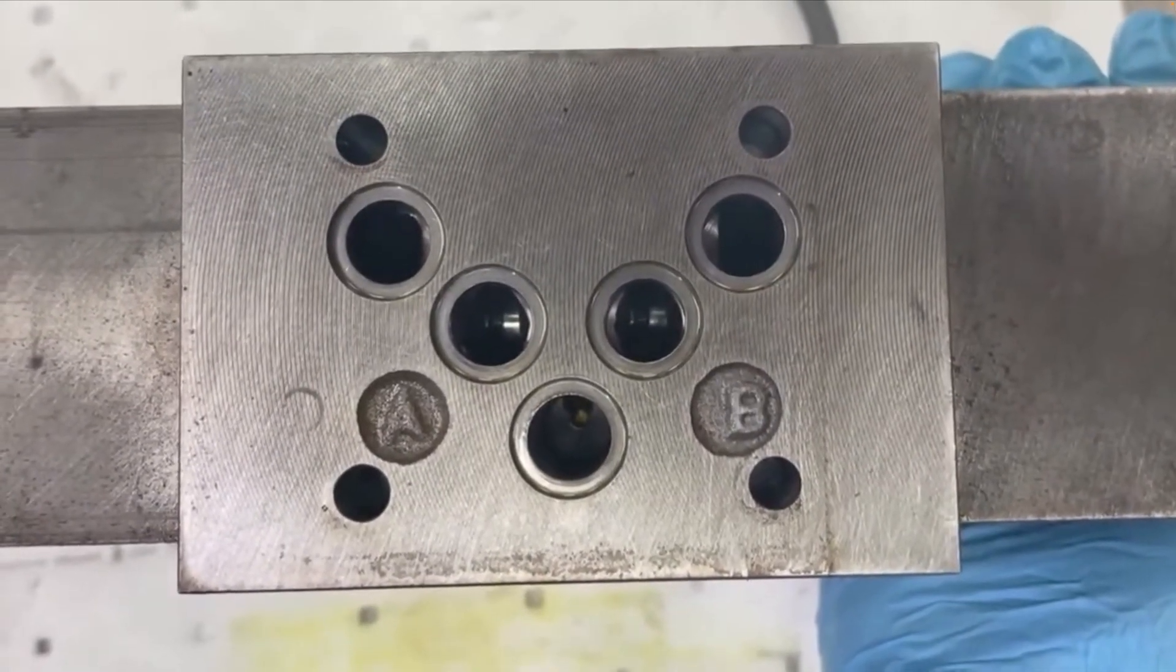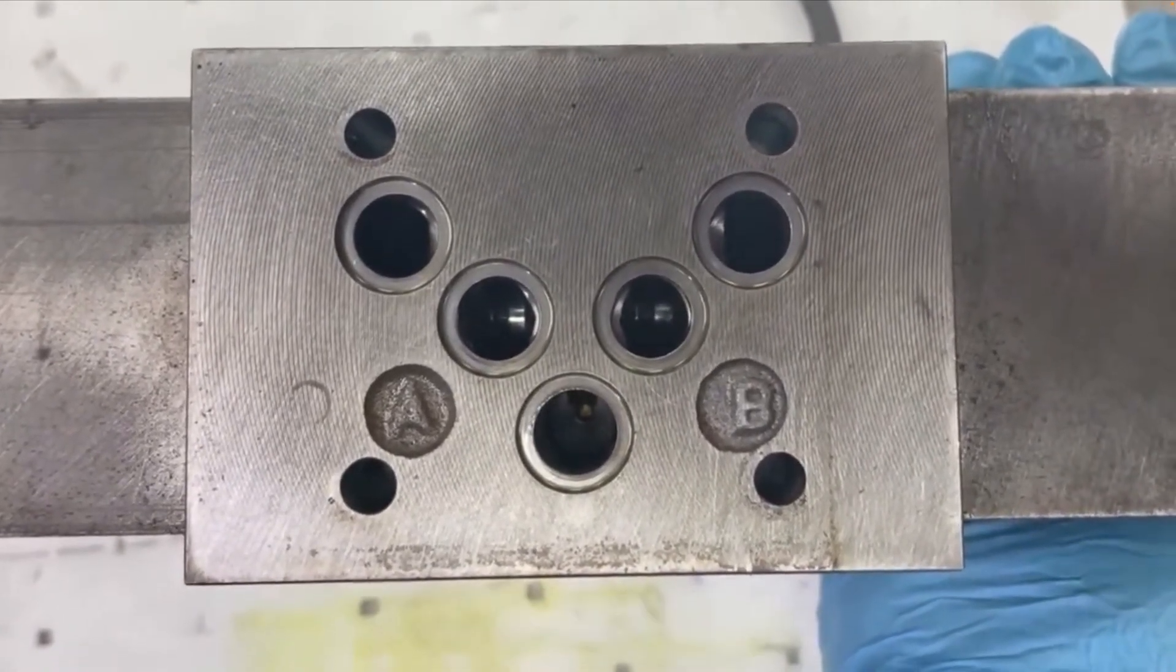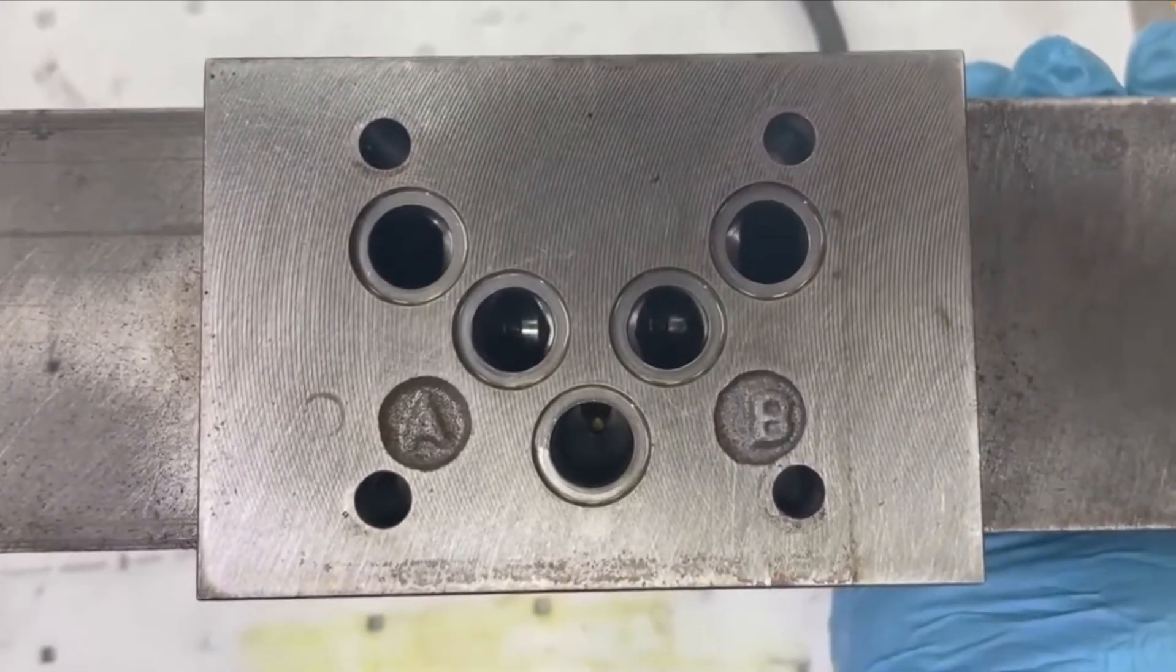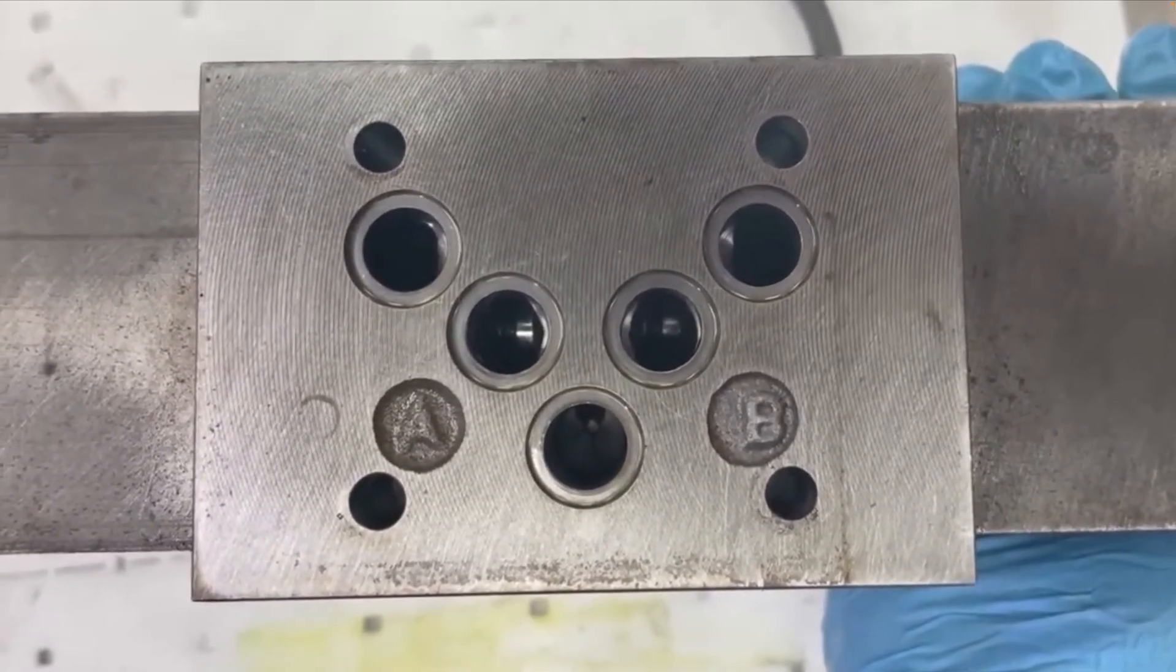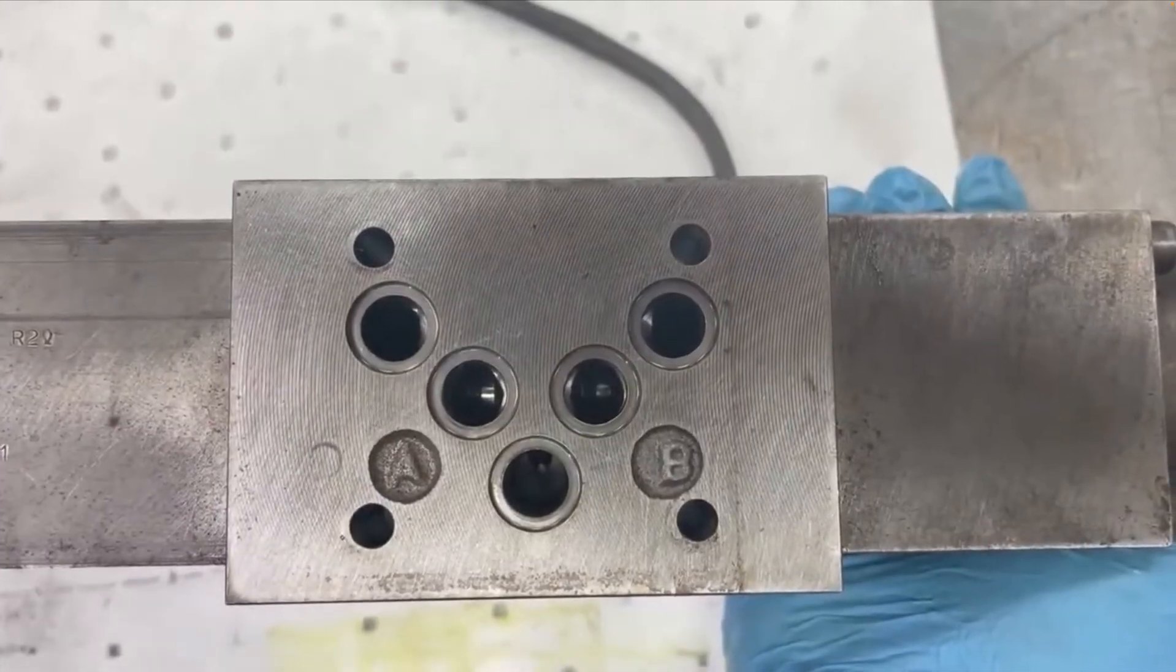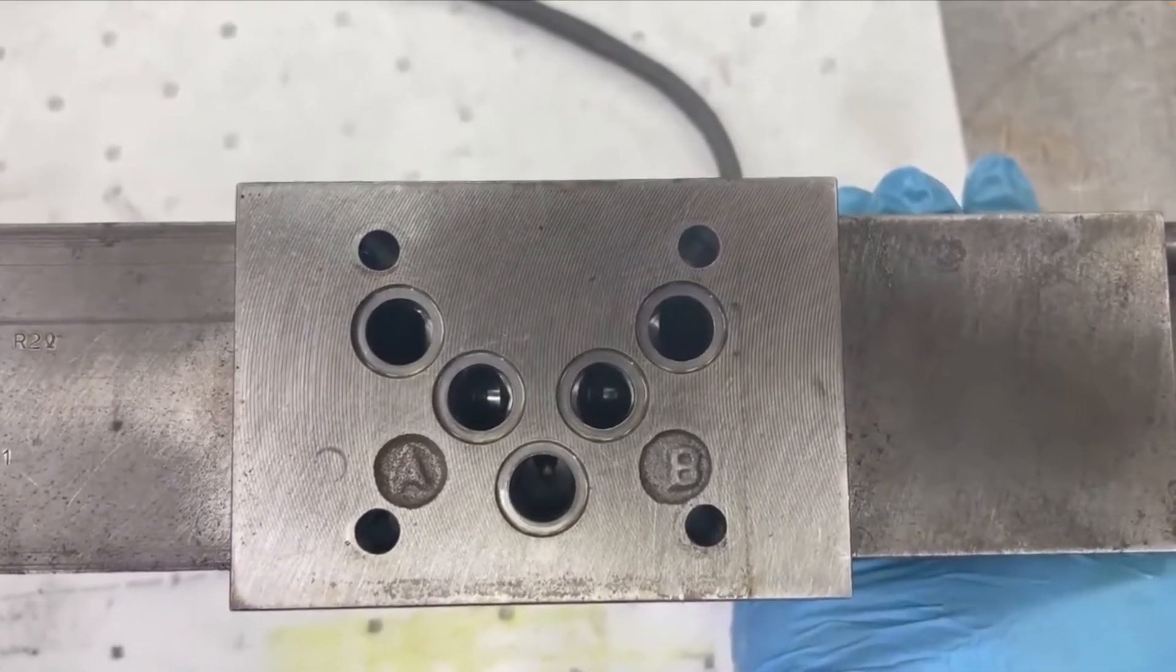So this tells us when we supply a command signal that the outboard electronics of this valve is doing its job. It is shuttling the spool to the left and to the right according to its response curve.